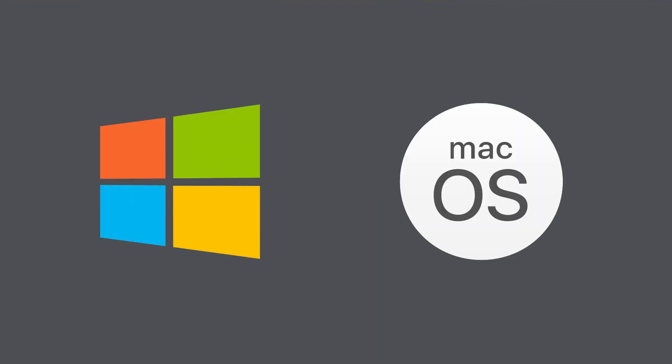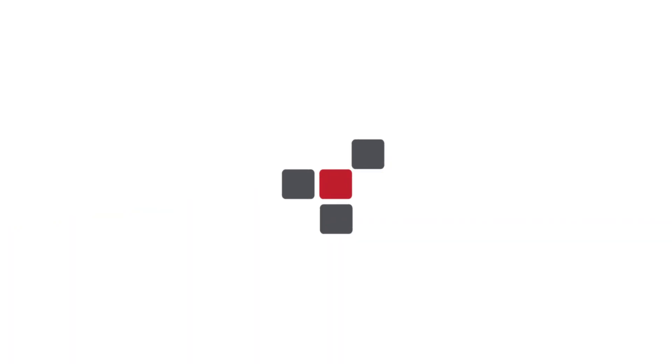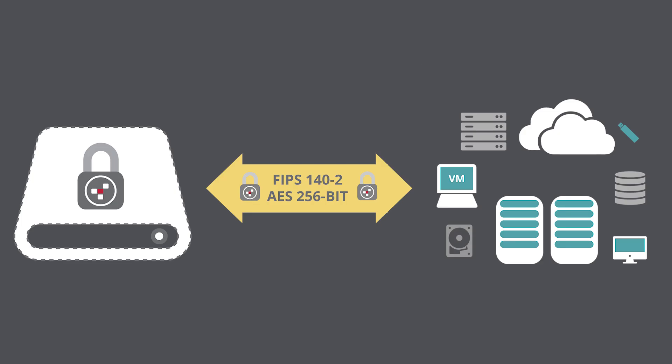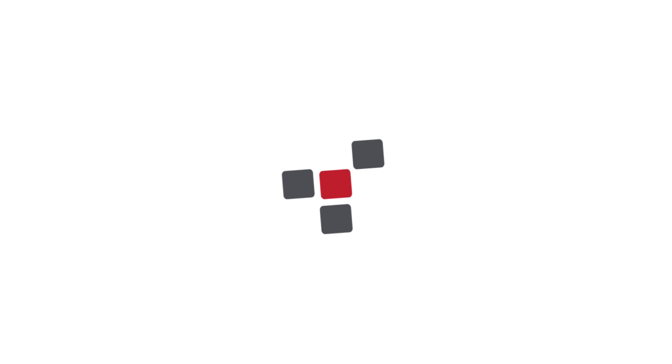Whether you're using Windows or macOS, Safecrypt is the best way to secure your important data. Safecrypt is incredibly easy to use. Once you set up a virtual drive using Safecrypt, your files are encrypted locally and then stored on your preferred storage — maybe cloud storage, local storage, or a network drive. This means that you keep total control of the encryption at all times.